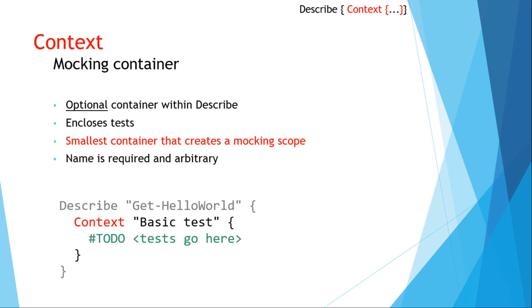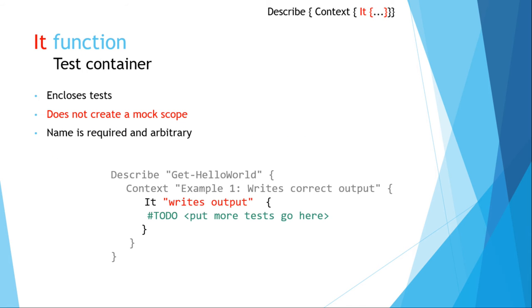Context is also a container — it lives inside Describe. It's optional, added for organization, but it's very important because Context is the smallest container that creates a mocking scope. Smaller containers will not contain a mock in Pester 3.4.0. The name is required and arbitrary. The next container is It — required inside either Describe or Context. It encloses your test and is the smallest test container, but it does not create a mocking scope.